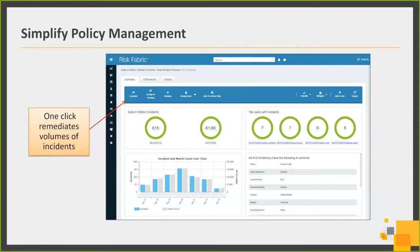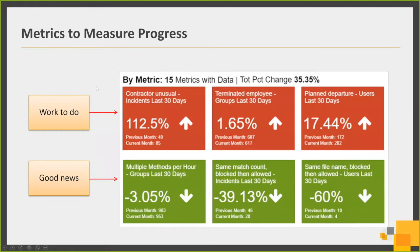One click can remediate many incidents. Looking at these incidents as an action — as an activity — is what helps you act more efficiently. Being able to escalate, classify, and mitigate these different incidents all in one shot is a key benefit. Of course, there are metrics to measure progress. These metrics dashboards provide a visual way of tracking critical changes and trends to DLP incidents over time, so DLP teams, security teams, upper management, and executive teams can see where things are and where they're going.